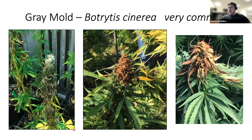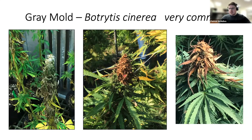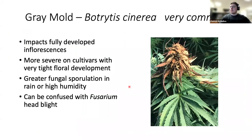A very common pathogen that infects the flower buds is gray mold, caused by Botrytis cinerea. When Botrytis first infects, you'll see a characteristic gray mold covering the inflorescence, which eventually turns into brown necrotic tissue, making the flower bud totally unmarketable. This can be very problematic for growers, particularly in very humid climates or in controlled environment agriculture. It is more common in cultivars with very tight floral development where moisture can become trapped and airflow is limited.